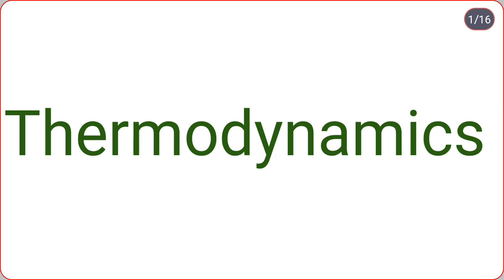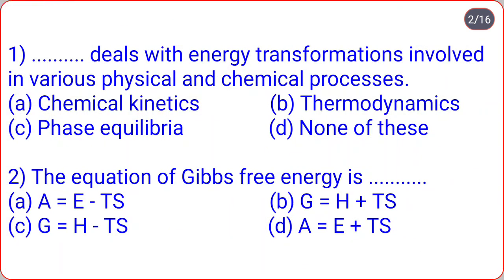Let us start multiple choice questions from the topic thermodynamics. First question: what deals with energy transformations involved in various physical and chemical processes? Options are: chemical kinetics, thermodynamics, phase equilibrium, none of these. Correct option is B — thermodynamics deals with energy transformations involved in various physical and chemical processes.